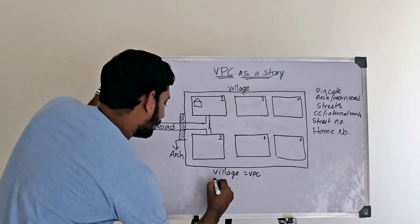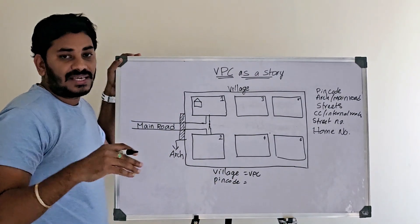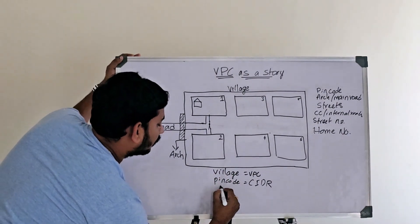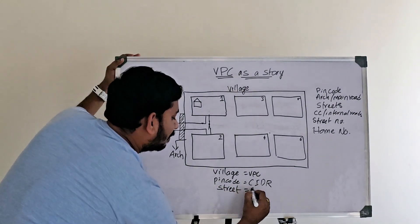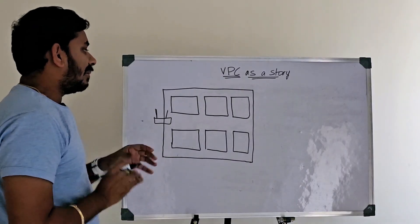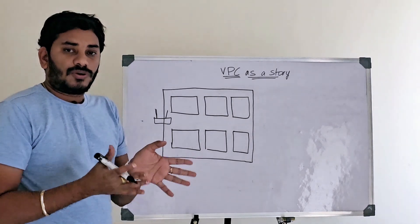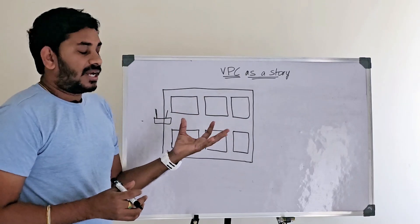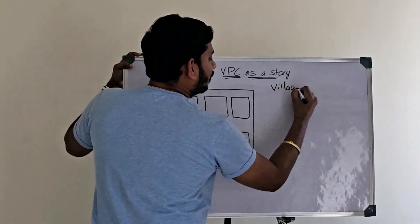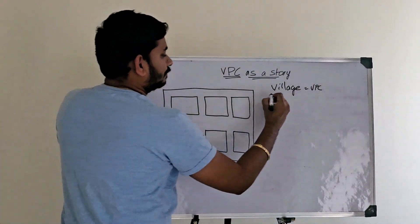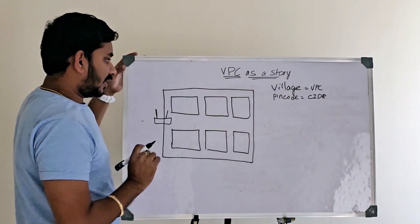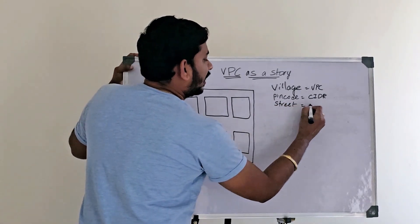So the village is called the VPC. The street is called the subnet. The village PIN code is equal to the CIDR. Let's discuss the details of CIDR. The street is called subnet.